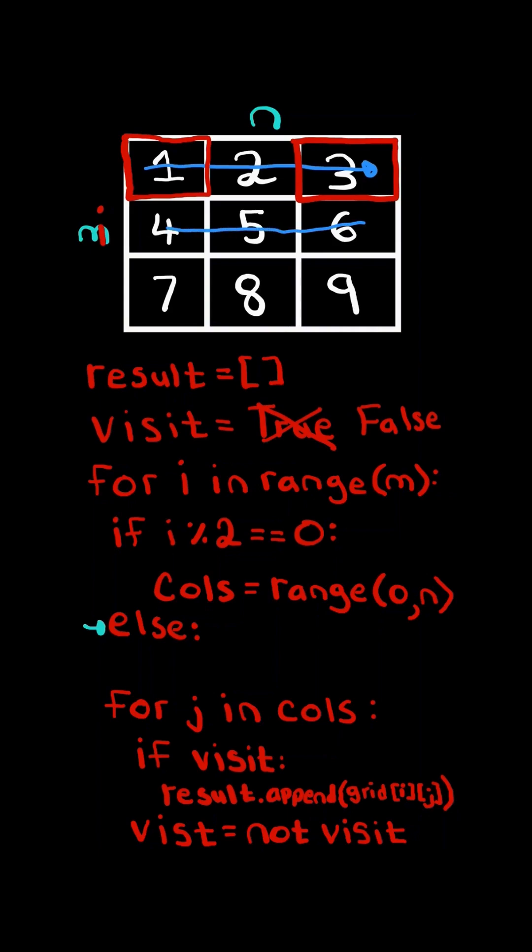Now if i is odd, we want to iterate right to left, and so we create a range starting from n minus 1 and iterating backwards. In other words, moving from right to left. We iterate through the columns in this range. Since visit is false, we do not add it to the list, and so we update it and make it true, and iterate backwards and decrement j by 1.